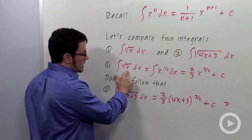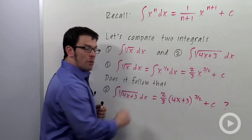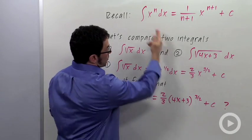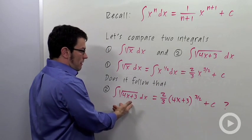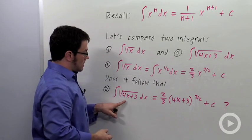When I integrate root x, I can just immediately convert that to a power of x and use the power rule from up here. The question is, can I do that for root 4x plus 3?